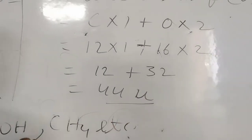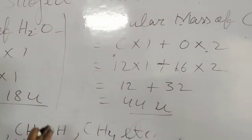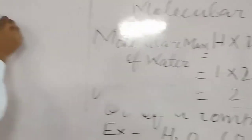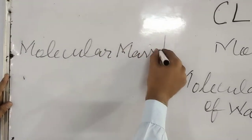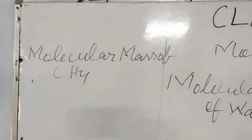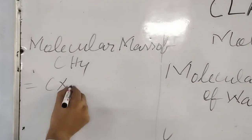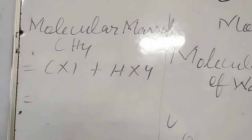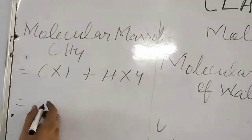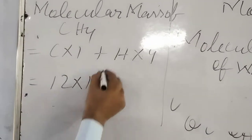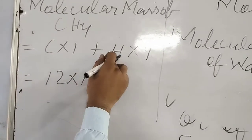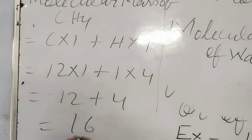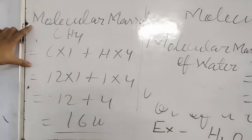44 U is the unit of the molecular mass. Like this, you will get the molecular mass of methane, CH4. You will break this formula: carbon is one, hydrogen is four. The atomic mass of carbon is 12, and the atomic mass of hydrogen is 1. So 12 plus 4 gives 16 U. So 16 U is the molecular mass of methane.